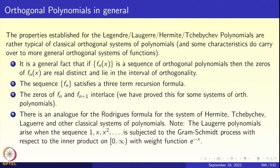Now let us say a few words about orthogonal polynomials in general. We see certain patterns emerging in our discussions. The Legendre polynomials, the Chebyshev polynomials, the Hermite polynomials, and the Laguerre polynomials are the four important classical orthogonal systems. They all have certain features in common: the zeros are real, they are distinct, and they lie in the interval of orthogonality.